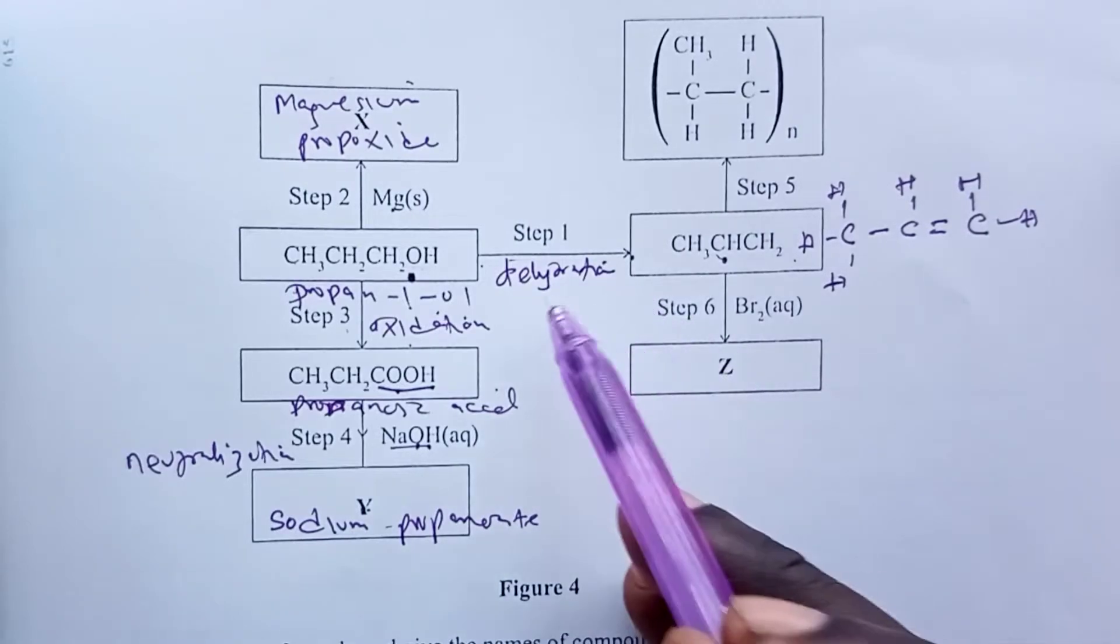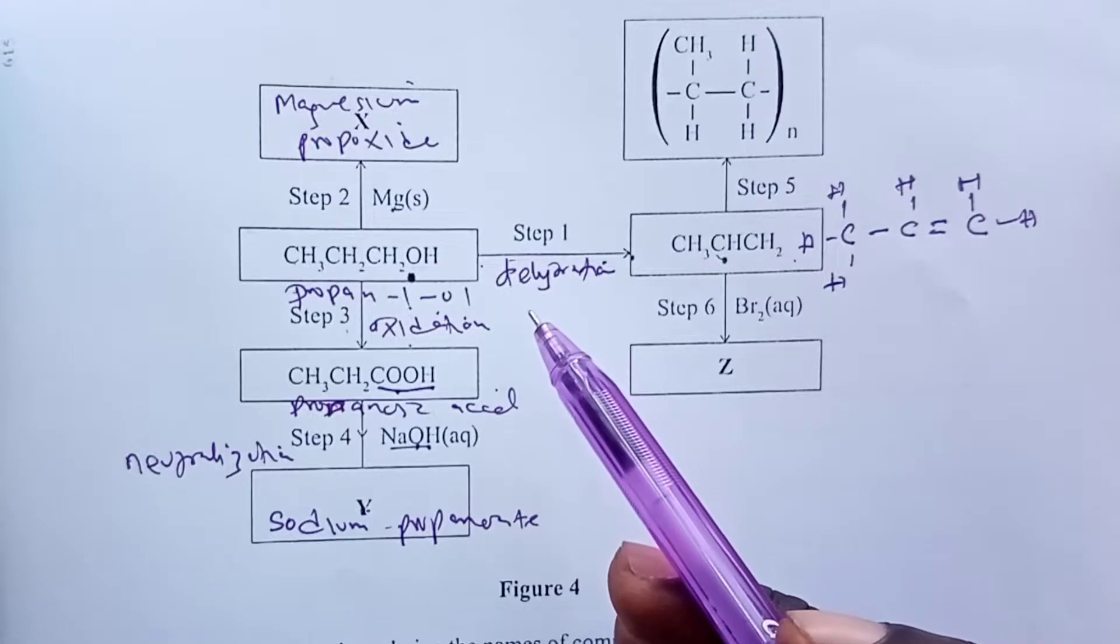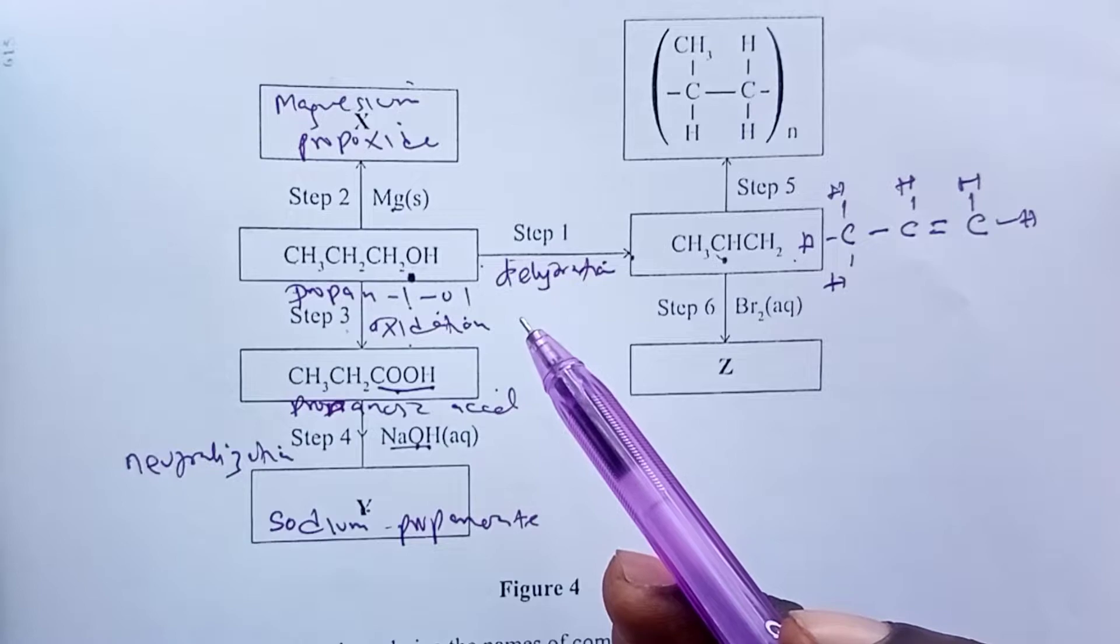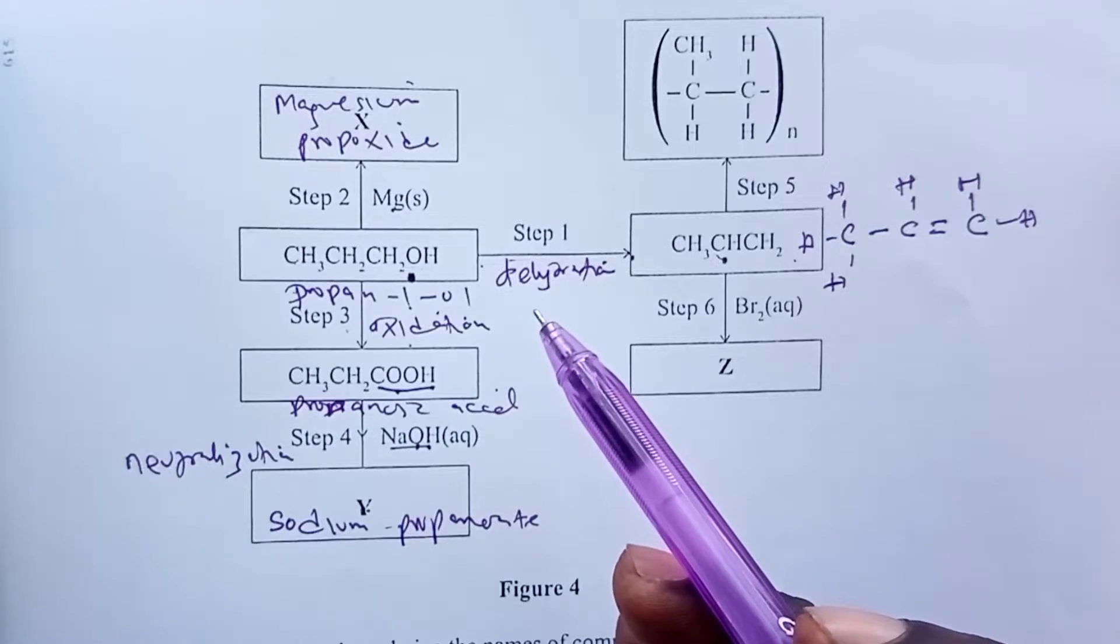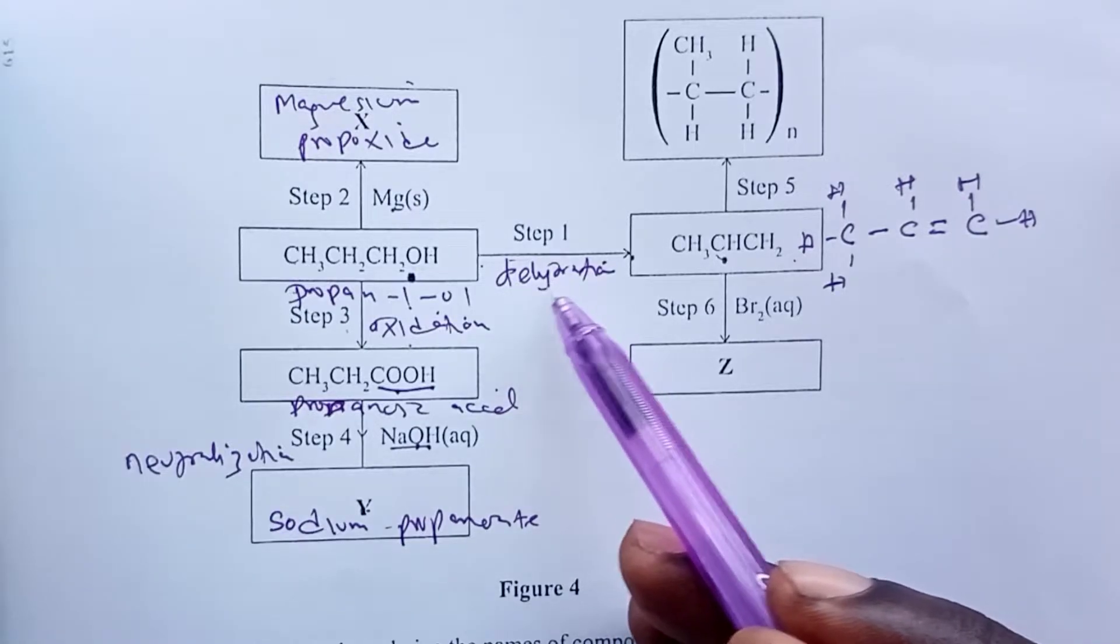Again, take note. What do we use to dehydrate? Concentrated sulfuric acid mainly, but we do have some others like aluminum oxide, phosphoric acid. Aluminum oxide can also—I mean silicon(IV) oxide, which can also be called silica. Aluminum oxide can also be called alumina, and so on. All those can be used to dehydrate. And of course the condition is heat.